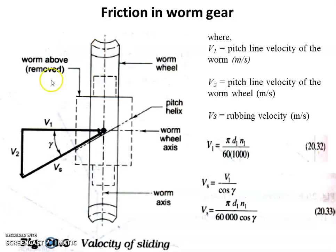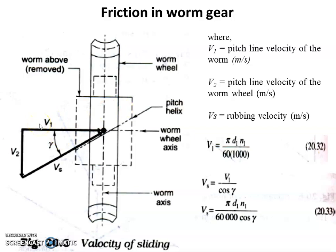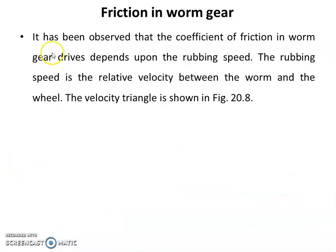If we look at this figure, the dotted portion shown here is the worm and the longer portion shown here is the worm wheel. We may consider this as a top view from which the worm and worm wheel are observed. W1 is considered as the pitch line velocity of the worm, expressed in meters per second, and W2 is the pitch line velocity of the worm wheel, also in meters per second.